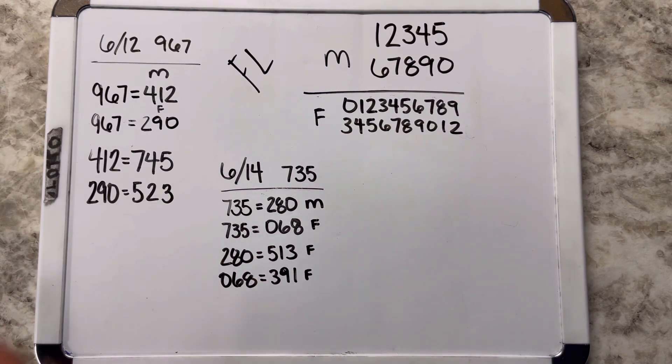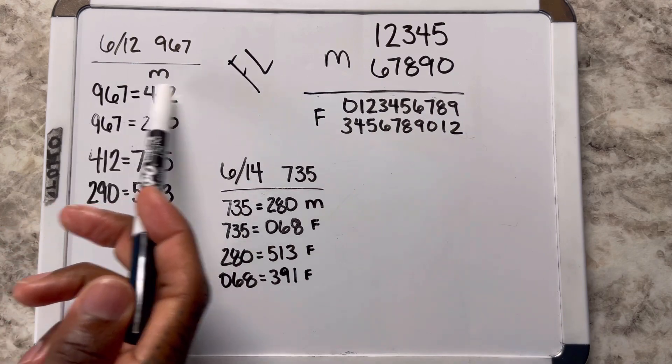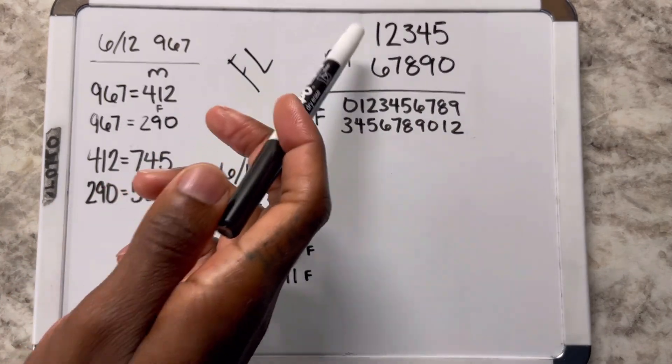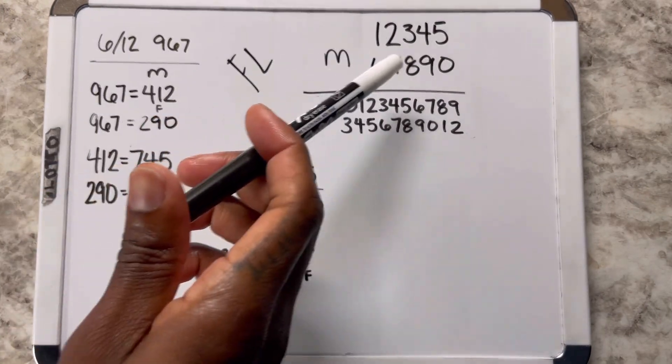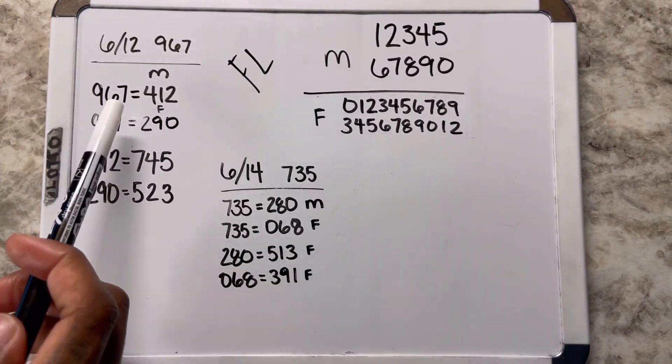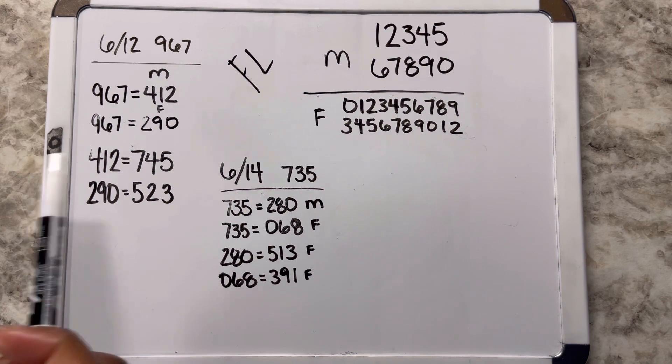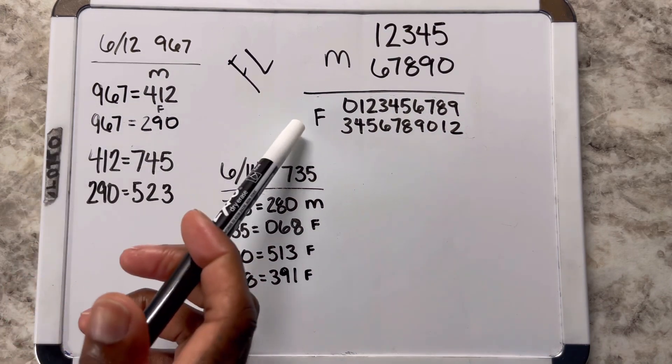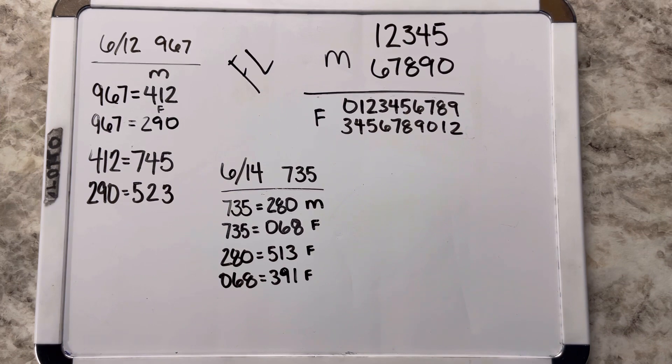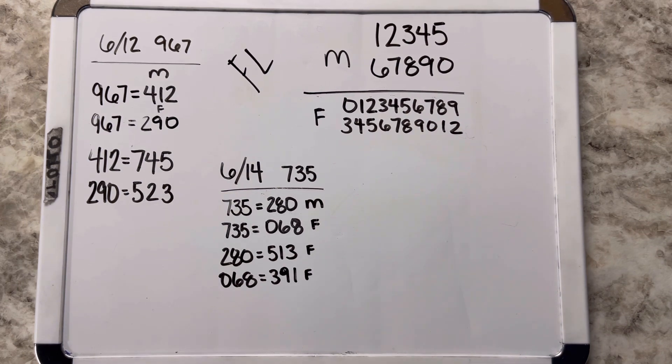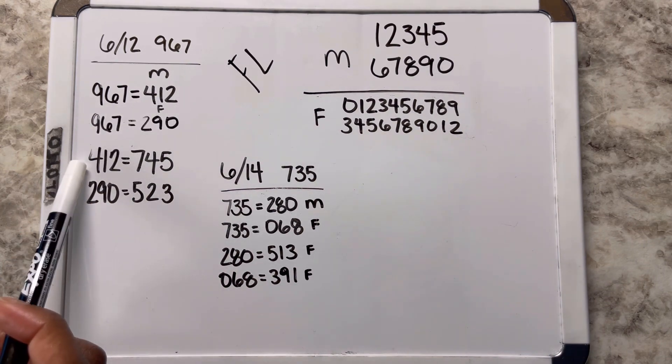On the 12th, 967 came out. I converted this 967 into 412, which is the mirror number. Mirror numbers are 1 through 5, you add 5 to each number. Then I converted that into the flip number. The flip number is 0 through 9, you add 3 to each number.